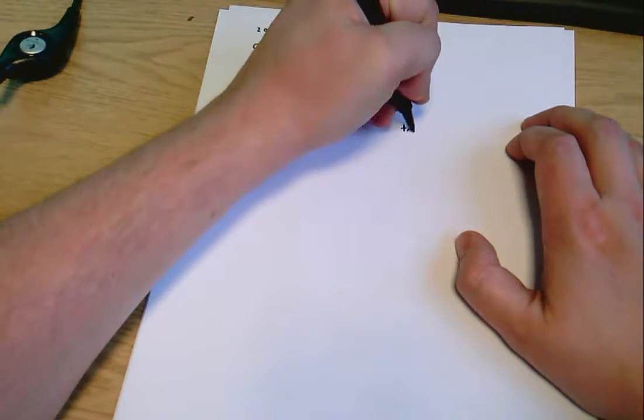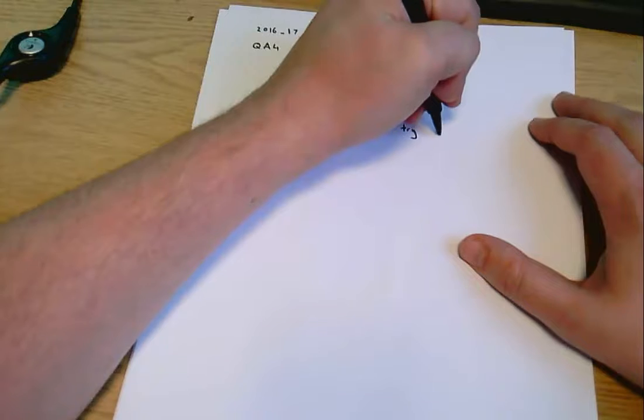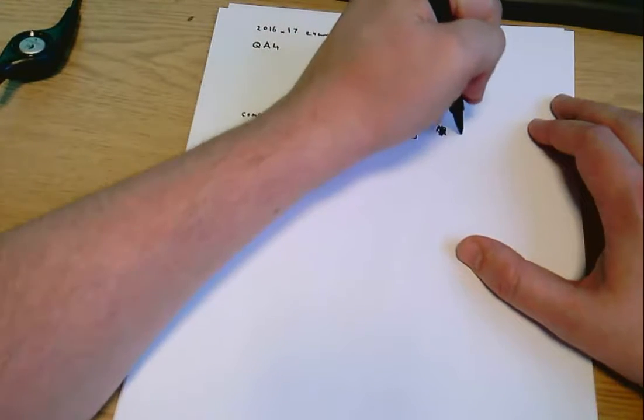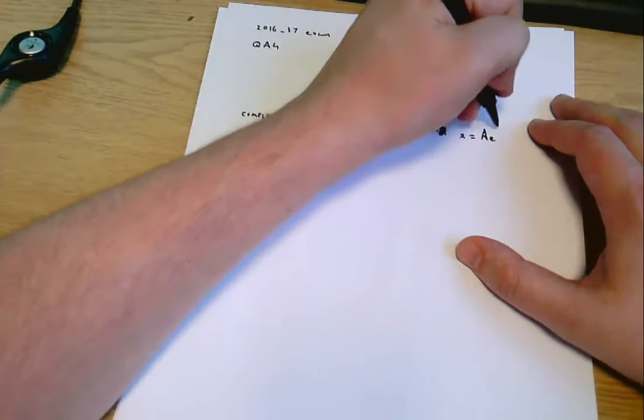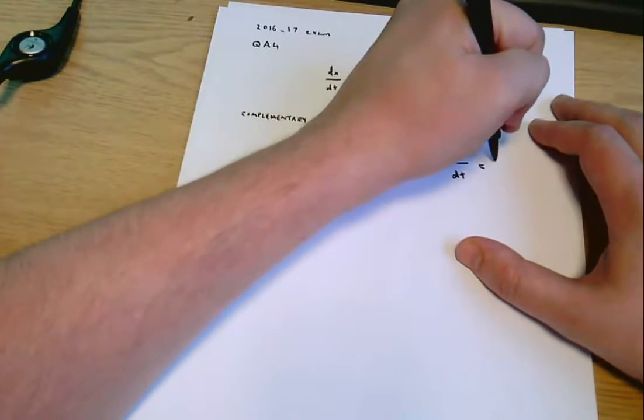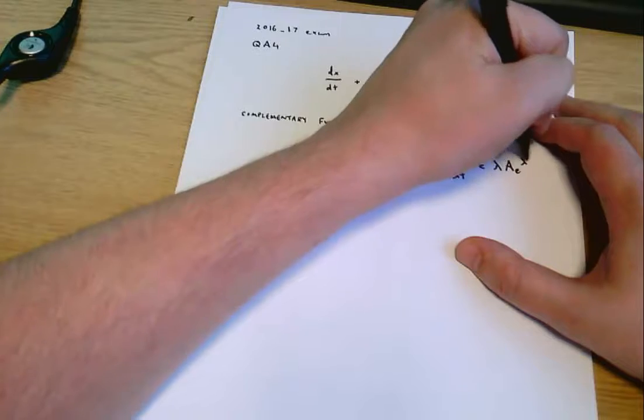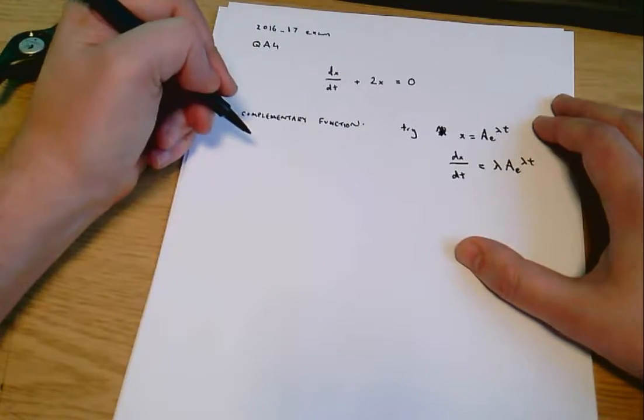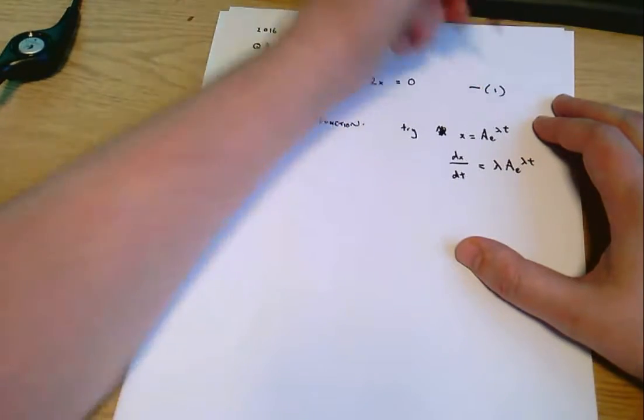So with all these things what we do is we try saying x equals a e to the lambda t, which means that dx by dt equals lambda a e to the lambda t.